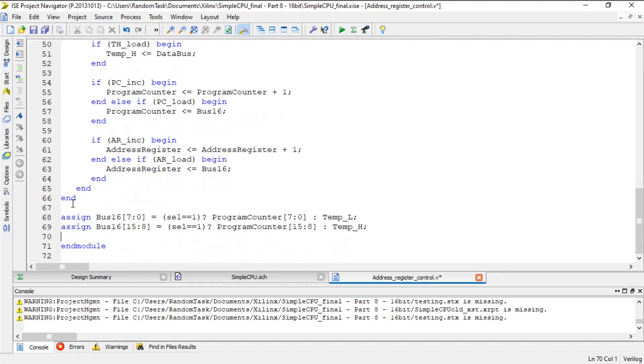Finally, there are two assigned statements with the question operator. This will be the MUX in the outline, and each statement controls what data is on the lower and upper part of the address to be loaded. The first says that if select is 1, then the lower 8 bits of bus 16 are the lower 8 bits of the program counter. If select is 0, then it will be the contents of the temp L register. The second assigned statement is identical except that it uses the upper 8 bits of the program counter and the temp H register.